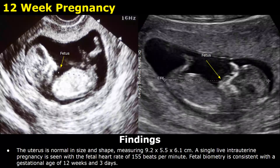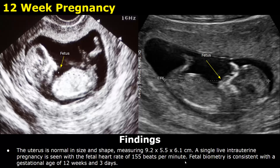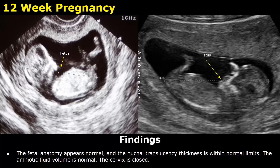This is a 12-week pregnancy. Here is the size of the uterus. A single live intrauterine pregnancy is seen with a fetal heart rate of 155 beats per minute. Fetal biometry is consistent with a gestational age of 12 weeks and 3 days. After that you can write about fetal anatomy, the nuchal translucency thickness, and the amniotic fluid volume. In the end you can also write about the cervix, which will be closed in normal cases.